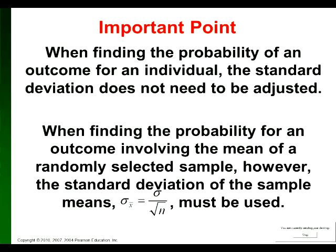However, when looking for the probability of an outcome for a sample mean — a group rather than an individual — the last number you type into normal CDF is not just the population standard deviation. It's the population standard deviation divided by the square root of the sample size. Sigma is the standard deviation for the population; sigma-sub-x-bar is the standard deviation for the mean of a sample.